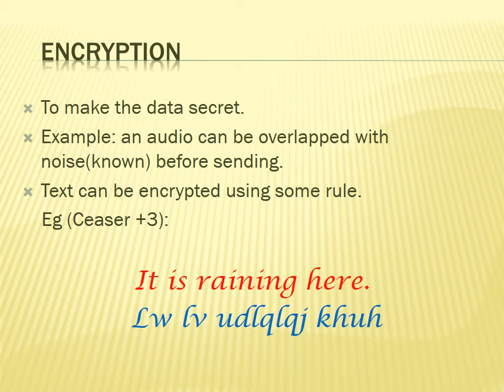Continuing the Caesar cipher example: 'I' is converted to 'L', 'T' to 'W', the next 'I' again to 'L', 'S' to 'V', and so on — the entire sentence is encrypted. You send the encrypted version to the receiver, and a third person will not be able to understand the message because it has been made secret. Only the receiver knows the key — which is to go back two alphabets to retrieve the original letter. This is how you encrypt your data. We will study more encryption methods and standards in upcoming lectures.